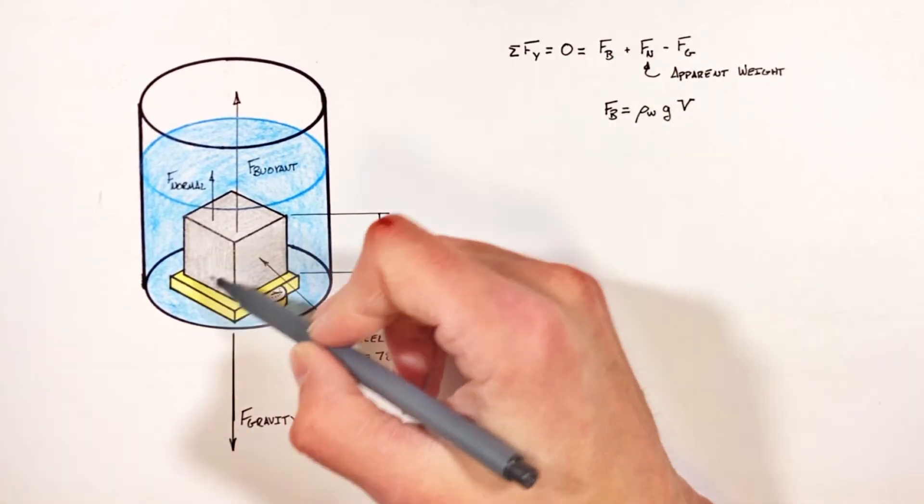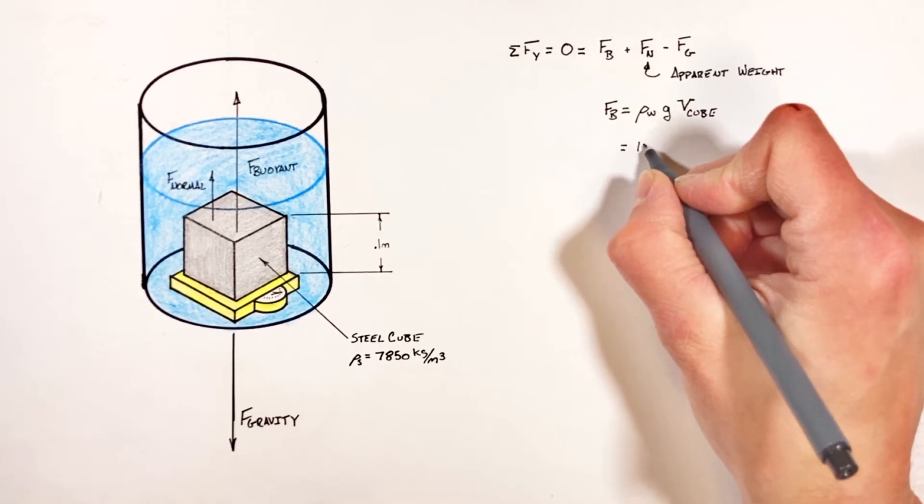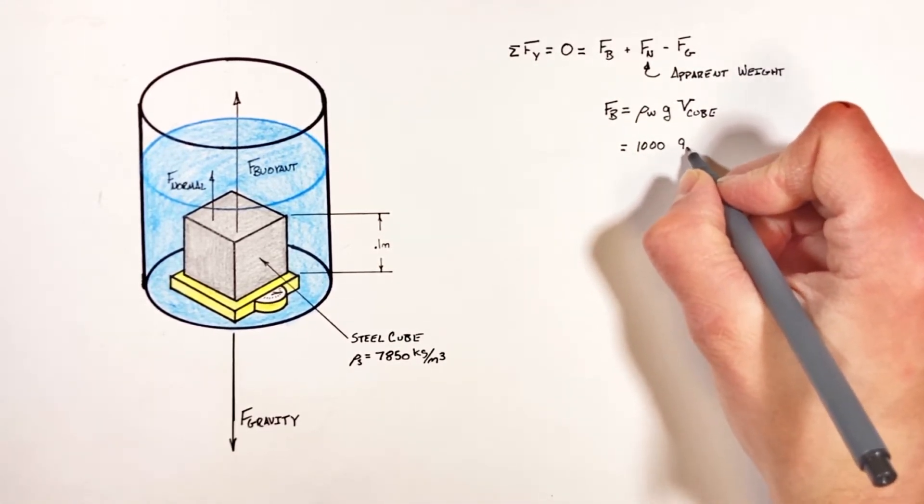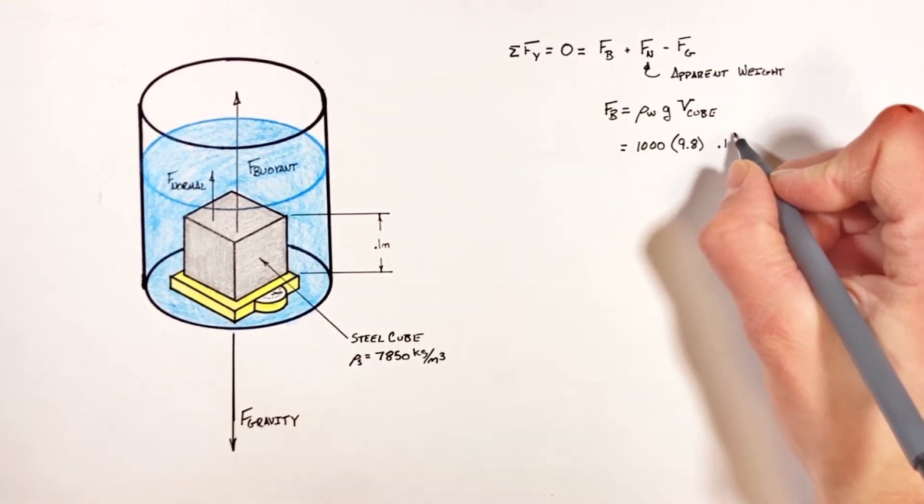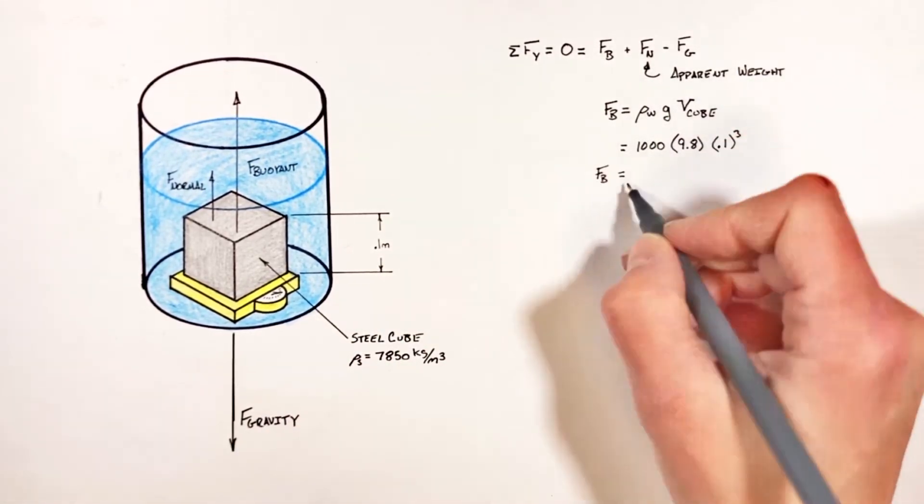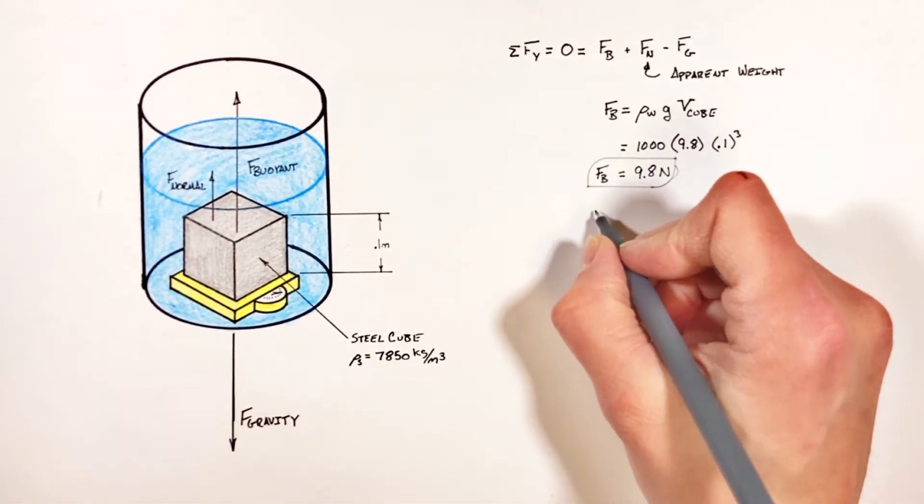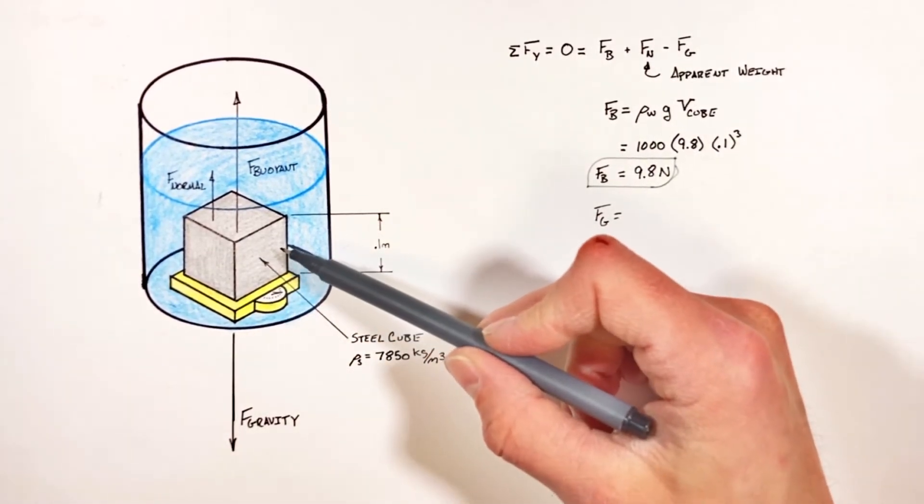Now in this case, the volume of fluid displaced is in fact the volume of the cube. So plugging in the density of water as 1,000 kilograms per cubic meter times 9.8 times the volume of our cube, which is 0.1 cubed, we get a buoyant force of 9.8 newtons.